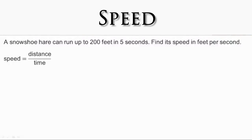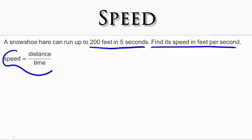Let's explore the concept of speed as a unit rate with this simple problem. A snowshoer can run up to 200 feet in five seconds. Find its speed in feet per second. Remember that speed is the rate of distance to time, and here is that equation we saw earlier. Also remember that speed is generally expressed as a unit rate. So if the time — such as five seconds here — is not equal to one, then we will need to divide the distance by the time in order to express the speed as a unit rate. Let's go ahead and try that.